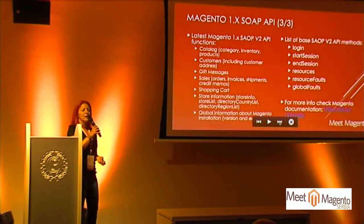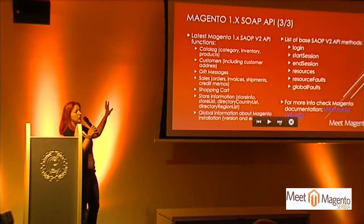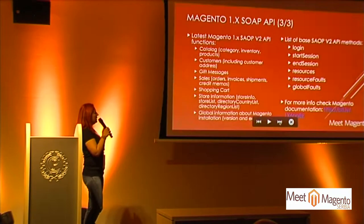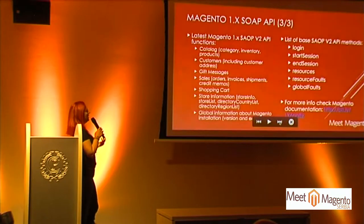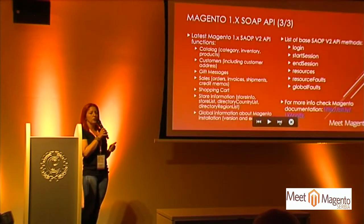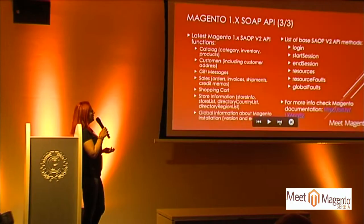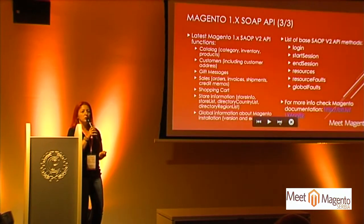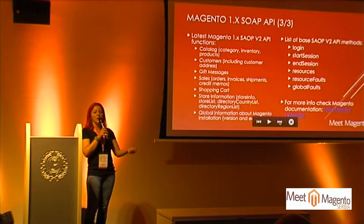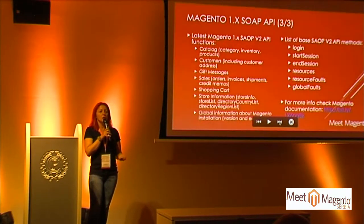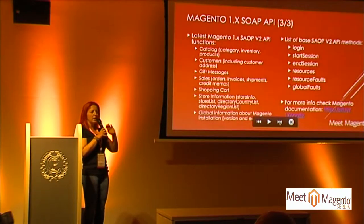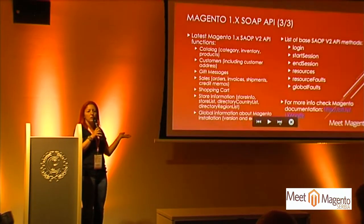We have a list of functions — it's not all of them, just some small things to show how much we can do. Basically, we could manipulate data in the catalog: manage categories, inventory, products, customers, customer addresses in Magento, and gift messages. It covered complete sales — orders, invoices, shipments, credit memos, shopping carts, and store information. What is actually cool about this is that you could access this information if you have the correct user and correct access rights, and browse and take this information into your application without direct access to Magento server.